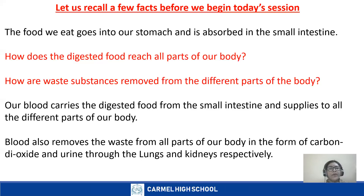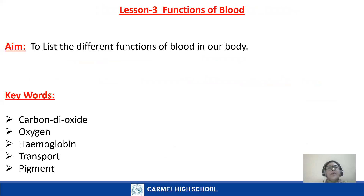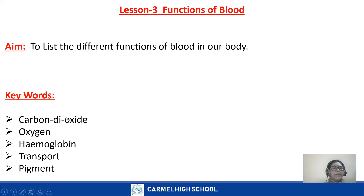Similarly, blood also removes waste from all parts of the body in the form of carbon dioxide through the lungs, and urine through the kidneys. Now we start today's class — we are going to study about the function of blood. Lesson three: Functions of Blood. Make a quick note of the keywords: carbon dioxide, oxygen, hemoglobin, transport, pigment.